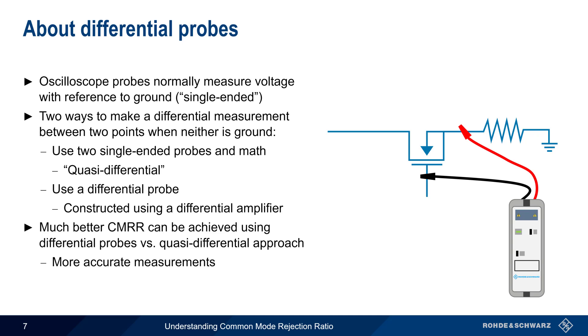Better CMRR means more accurate measurements, as well as less noise in the measurements. And this is particularly important when signal levels are low or common mode noise levels are high.